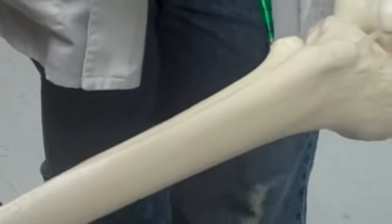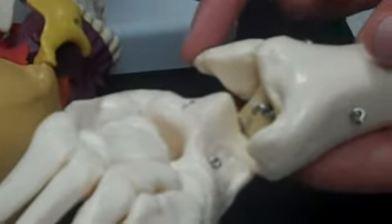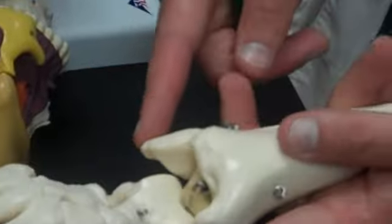On to the fibula. Fibula. The head is up here. And the lateral malleolus. If it were on an arm, we'd call it a styloid process. But it's not. So it's there.